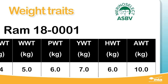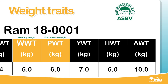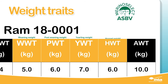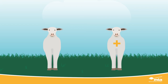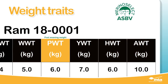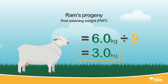Weight can also be measured at weaning, abbreviated to WWT; at post weaning or PWT; at yearling age or YWT; at hogget or HWT; and adult or AWT. A ram with a more positive value for each of these traits will produce progeny that are heavier at that age. If we look at post weaning weight, our ram is 6 kilograms, so his progeny would be 3 kilograms heavier at this age compared to a ram with an ASBV of zero.